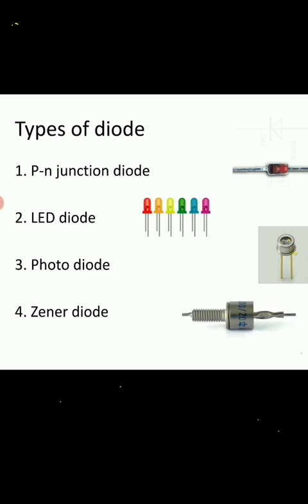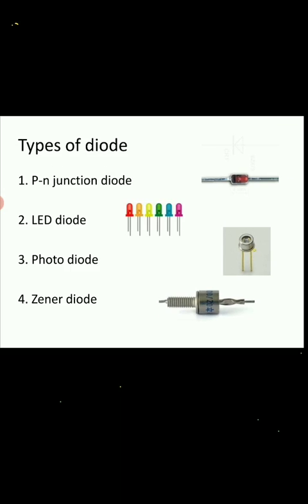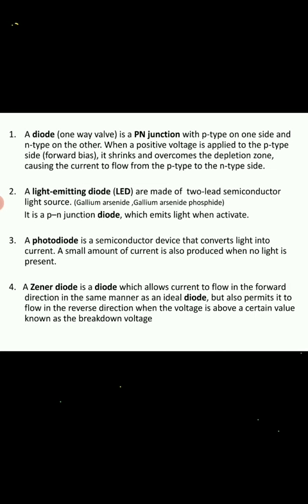We will see each diode thoroughly. PN junction diode uses two semiconductors — P-type and N-type. In forward biasing, it will overcome the depletion region and make it removed, giving forward current in a large amount.